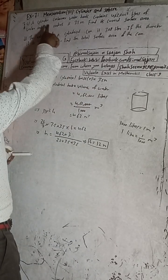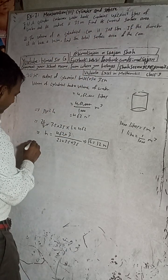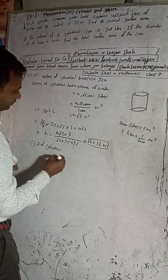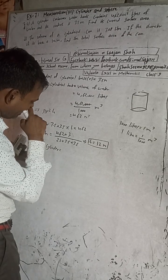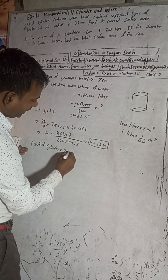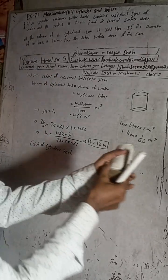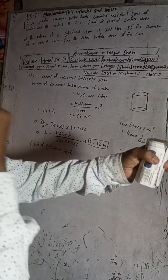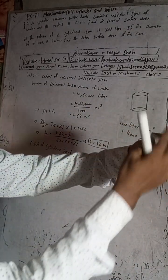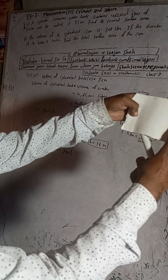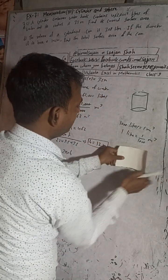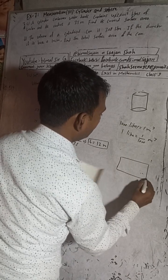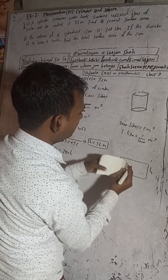The curved surface area of a cylinder equals 2πrh. The curved surface area means the rounded surface — without the top and bottom circles. To understand: if you cut and unroll the cylinder, it becomes a rectangle. The height of the rectangle is h, and the width is the circumference of the circle, which is 2πr.